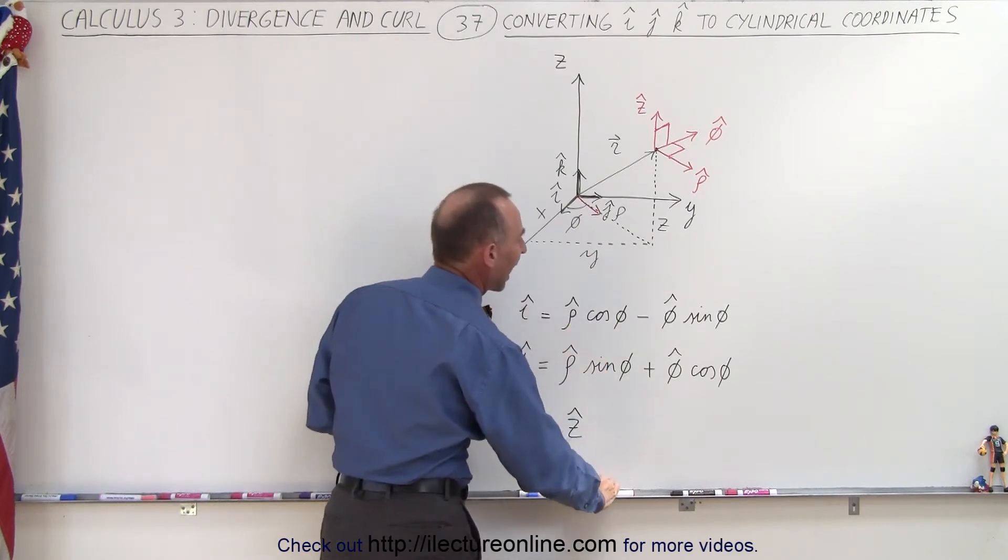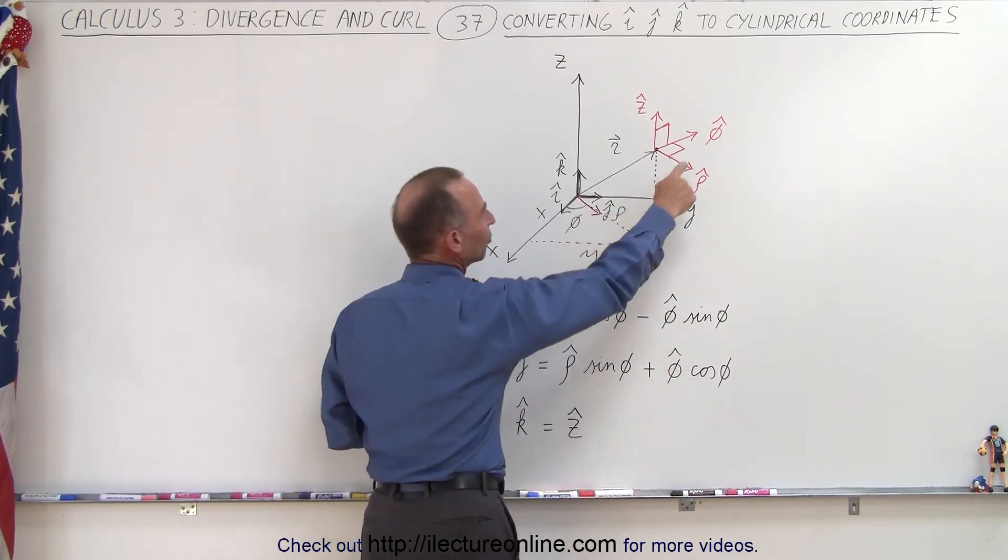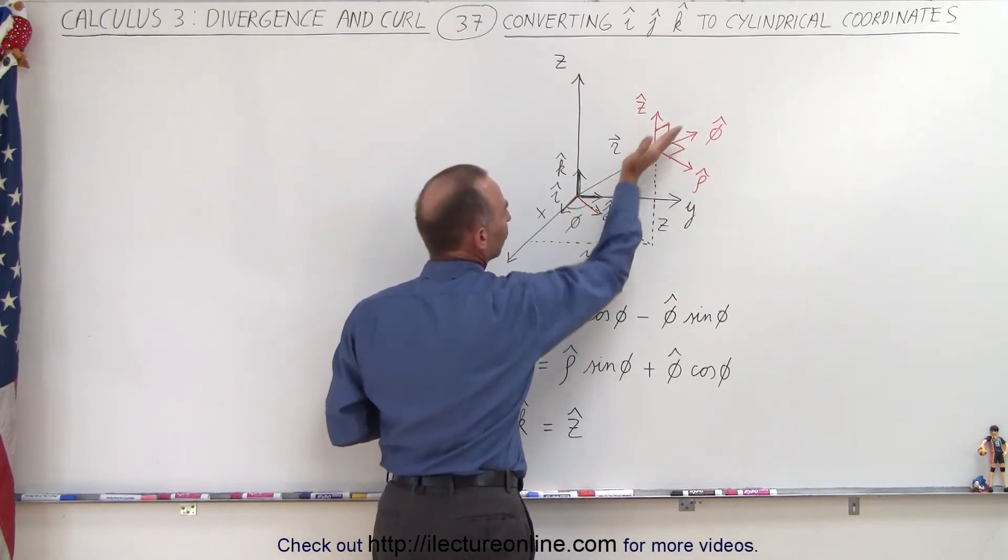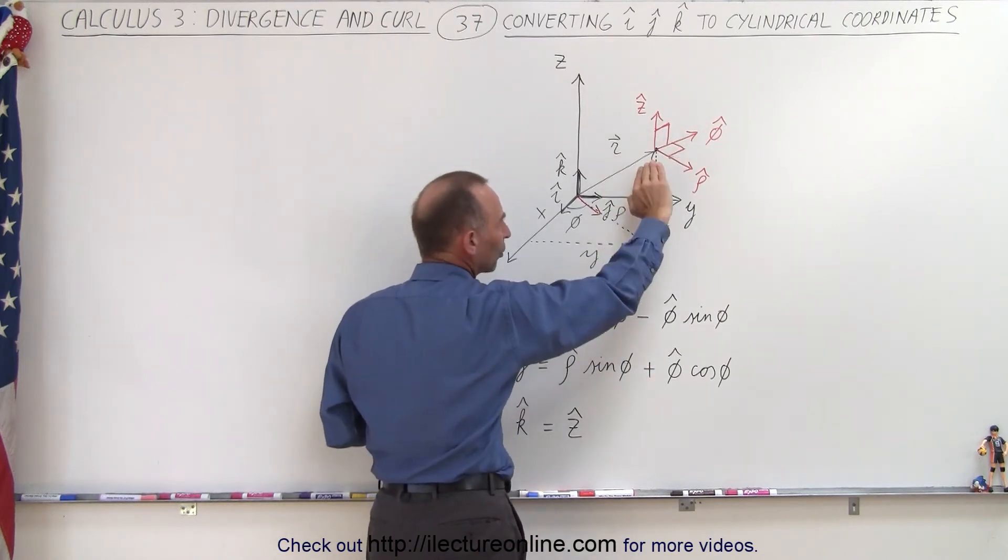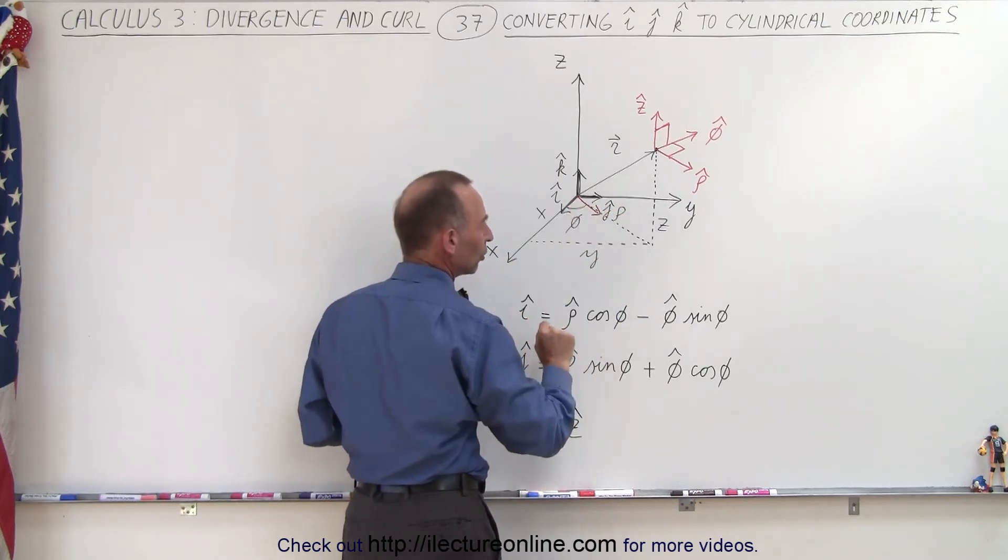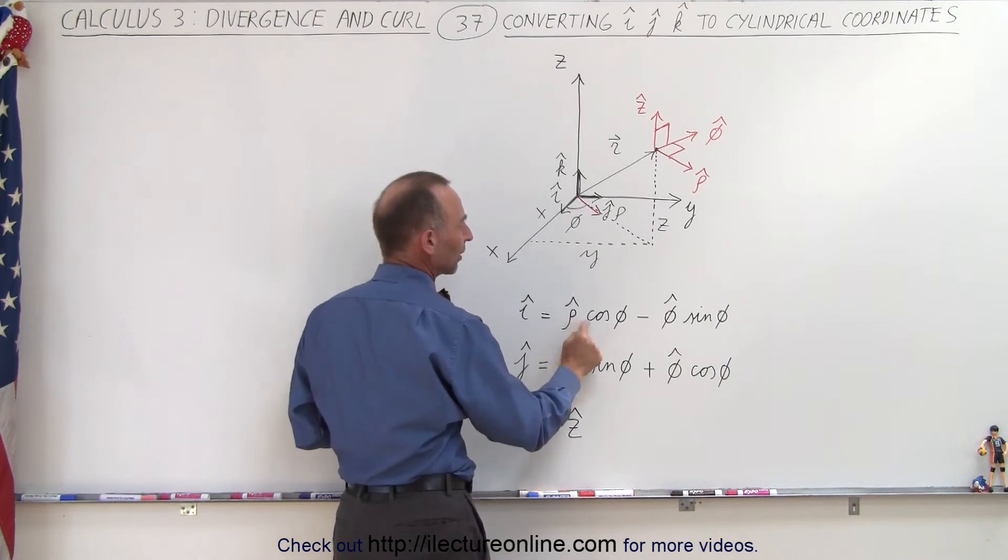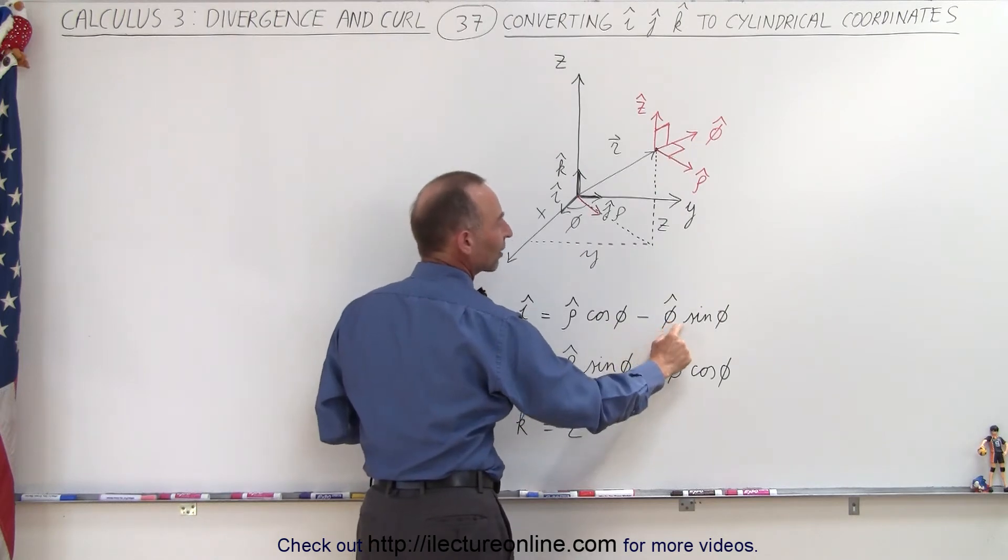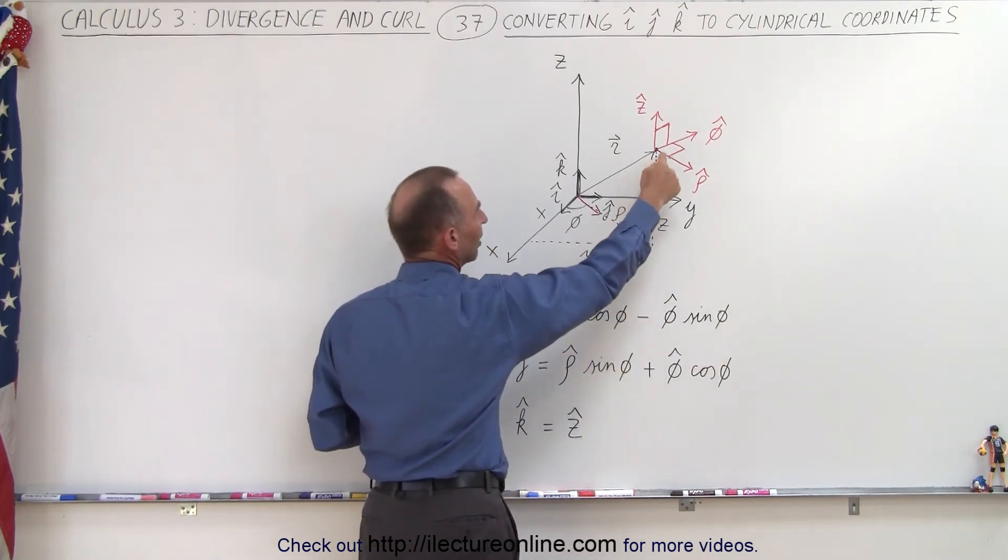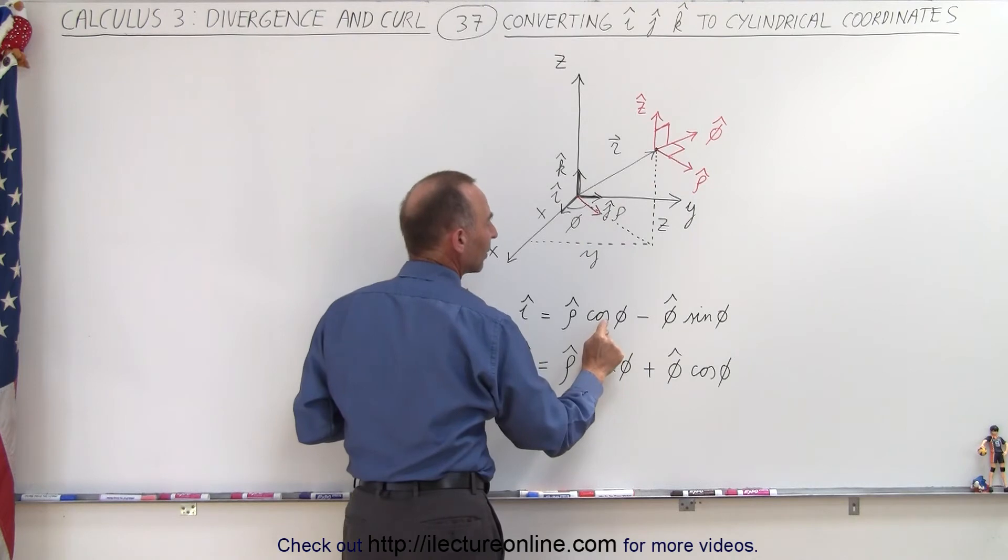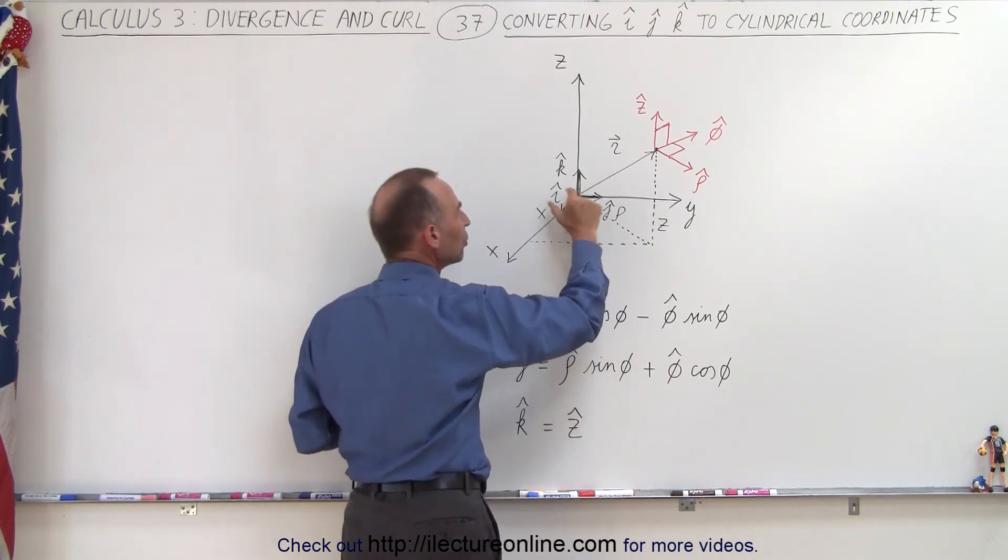And then to that we have to add the component in the x direction of the phi vector. We find that the phi vector points towards the negative x direction, so we need a negative sign in there to convert that. So we take the row unit vector times the cosine of phi minus the phi unit vector times the sine of phi, because notice in this case we're going to need the sine component of the phi unit vector to get the complete unit vector in the x direction.